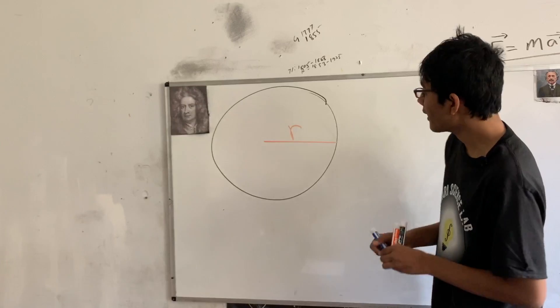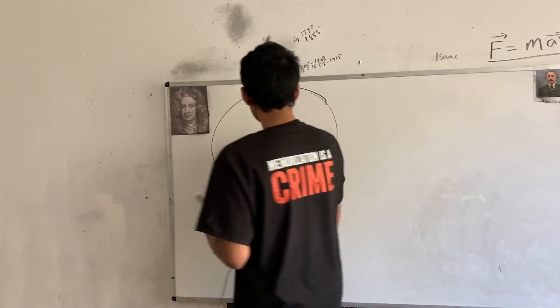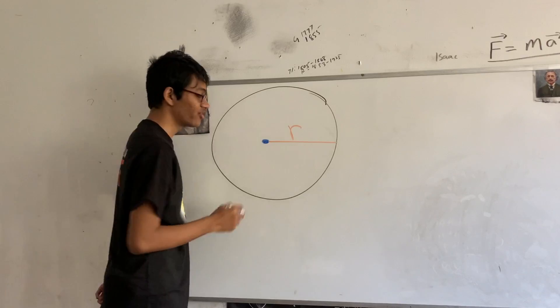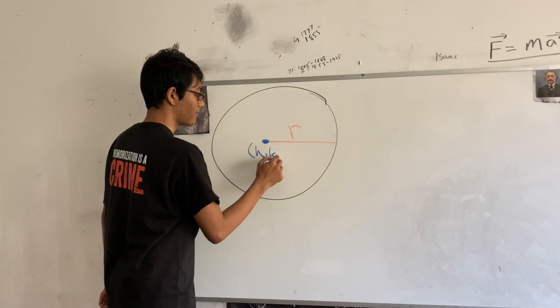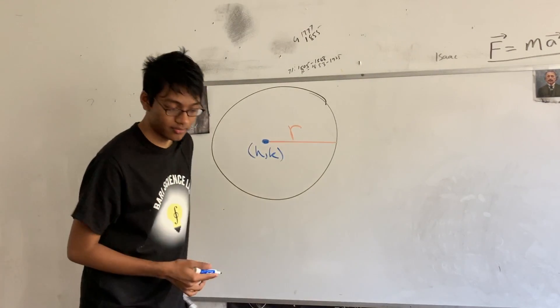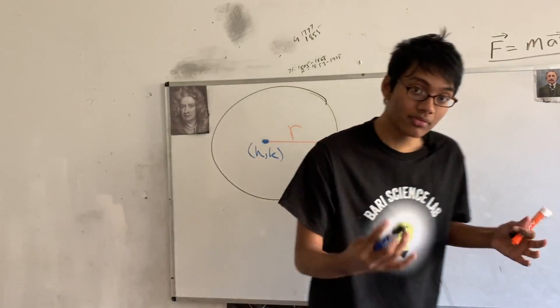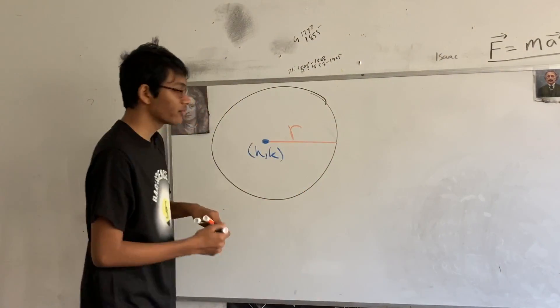And finally, number three, like any geometric object, a circle is going to have a position, and that position is going to be determined by its center. Let's call that center h, k, which is traditional by the way. Now, what is the equation for a circle that's going to encompass all of these facts? Well, let me give it to you.